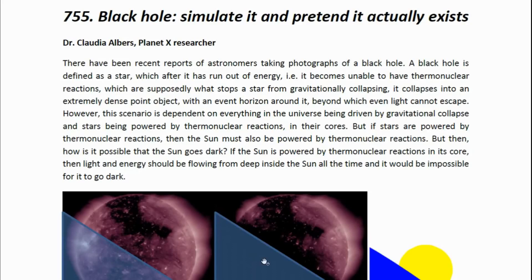However, this scenario is dependent on everything in the universe being driven by gravitational collapse, and stars being powered by thermonuclear reactions in the core. But if stars are powered by thermonuclear reactions, then the sun must also be powered by thermonuclear reactions. But then how is it possible that the sun goes dark? If the sun is powered by thermonuclear reactions in its core, then light and energy should be flowing from deep inside the sun all the time, and it would be impossible for it to go dark.